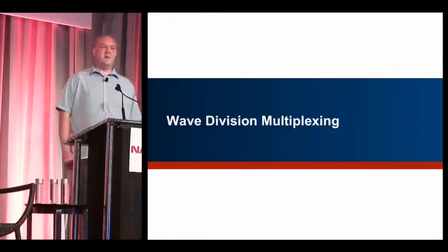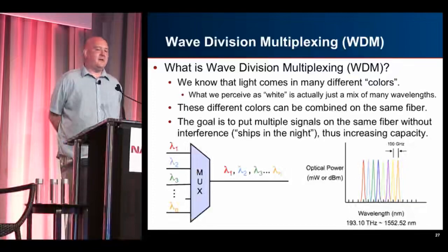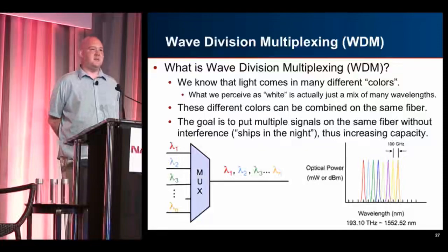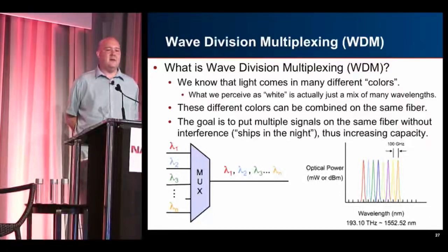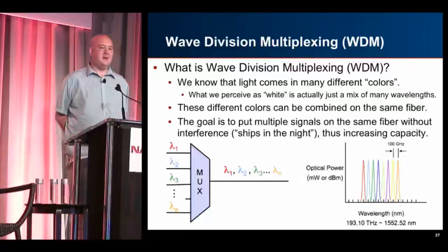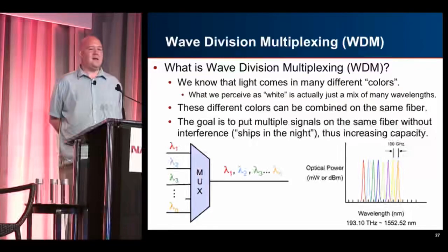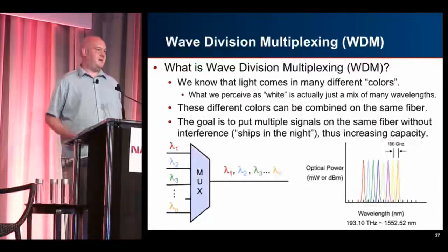Let's talk about wavelength division multiplexing. We all know that light comes in many different colors — white light is a mix of all different colors. You can put different colors of light on the same fiber and increase your bandwidth. The goal is to have these things passing each other without interfering: put 50 different colors of light in the same piece of glass and have them pass each other 'ships in the night' style, increasing capacity without interference. That's what WDM is about.